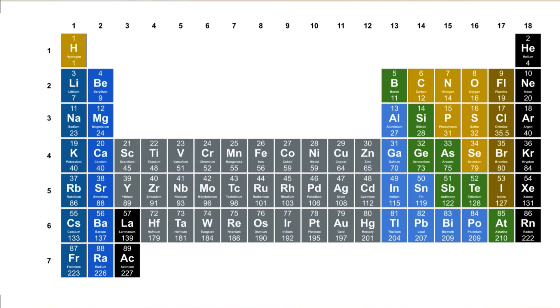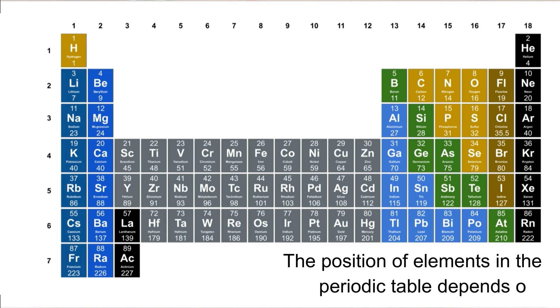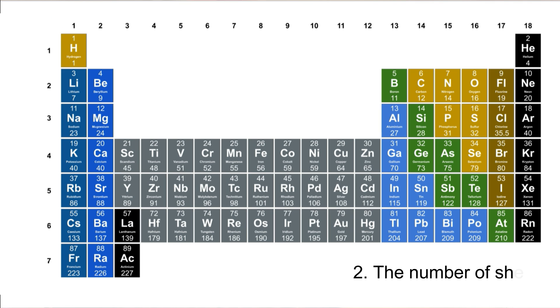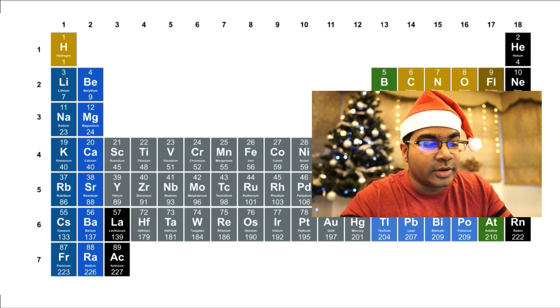When it comes to monoatomic ions, there is a very simple trick to remember the charges. All we have to do is refer to the periodic table. Remember that the position of elements in the periodic table depends on two things: the number of valence electrons, which determines its group number, and the number of shells, which determines its period.